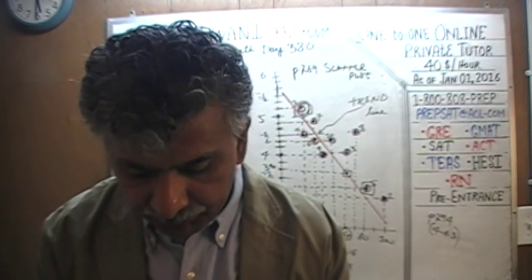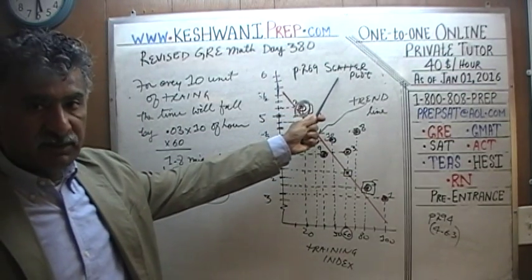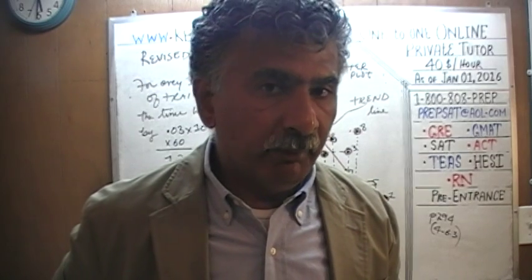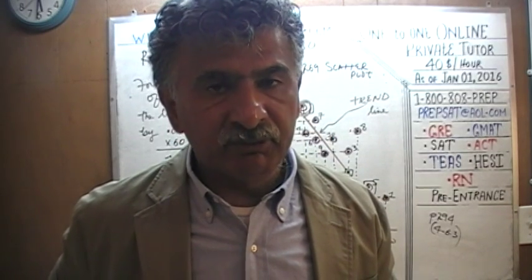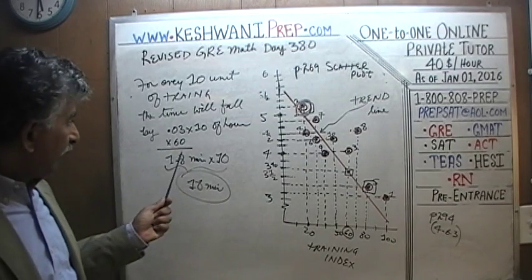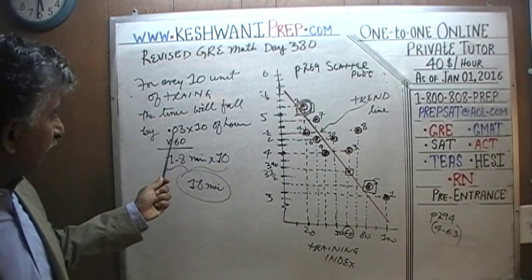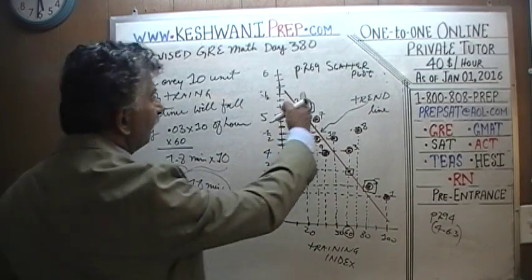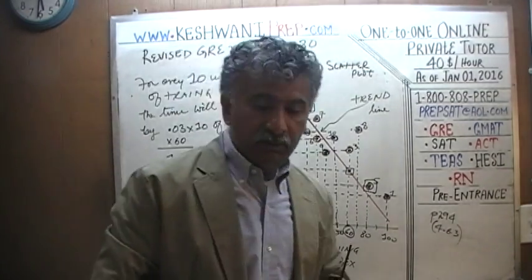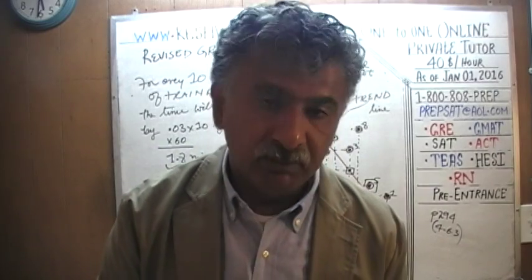Yesterday, on day number 379, we did a problem that appears on page number 269, dealing with the concept of scatterplot. The problem has 50 bicyclists, 50 subjects, 50 data points. We did a simpler version of it yesterday with only 10 bicyclists. We found the slope to be 0.03 with 10 of them.